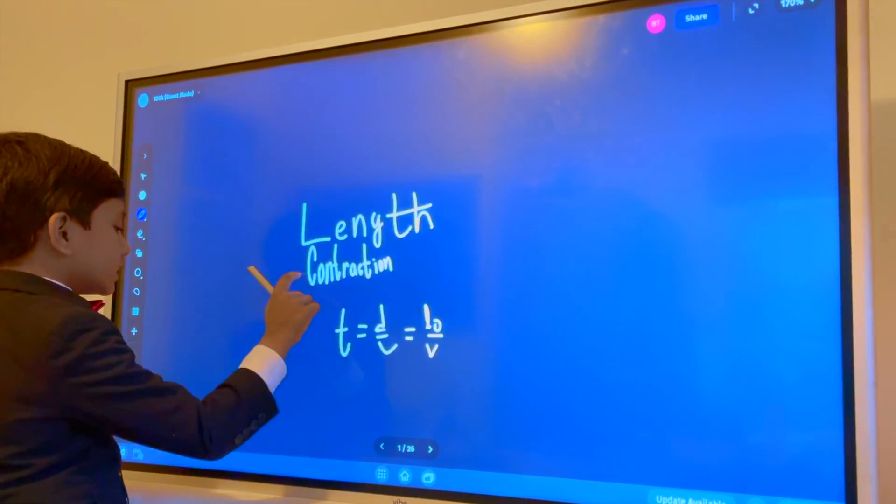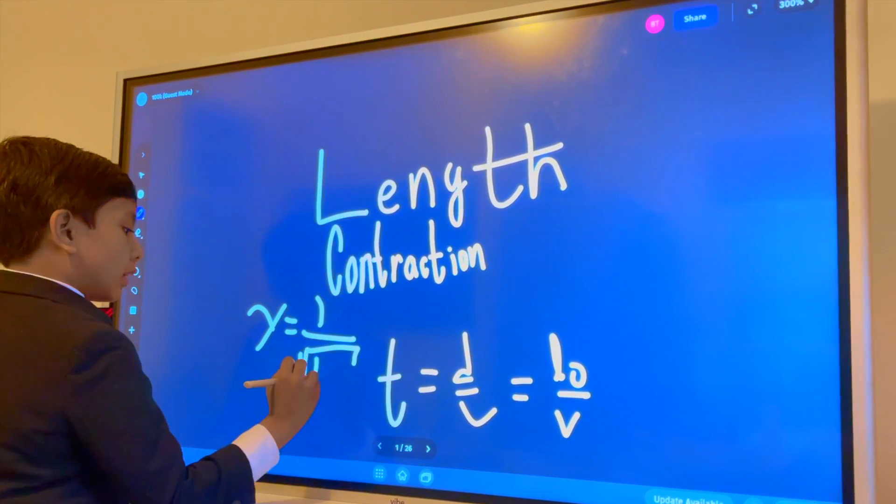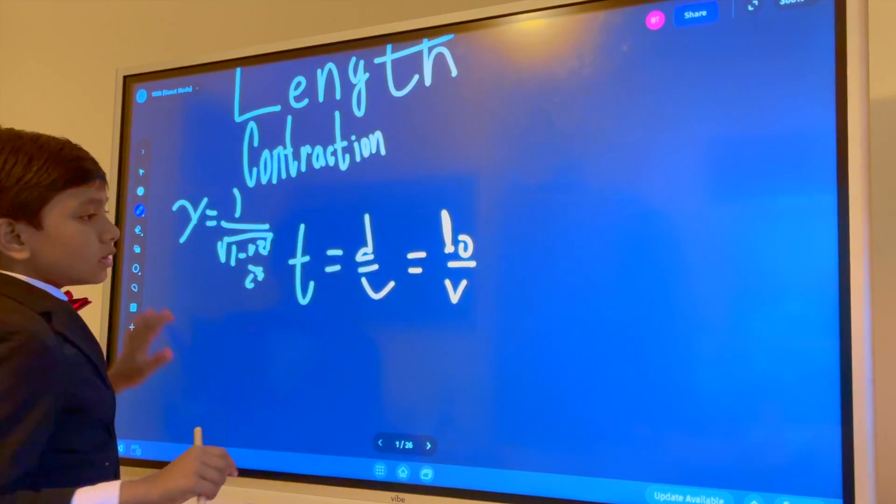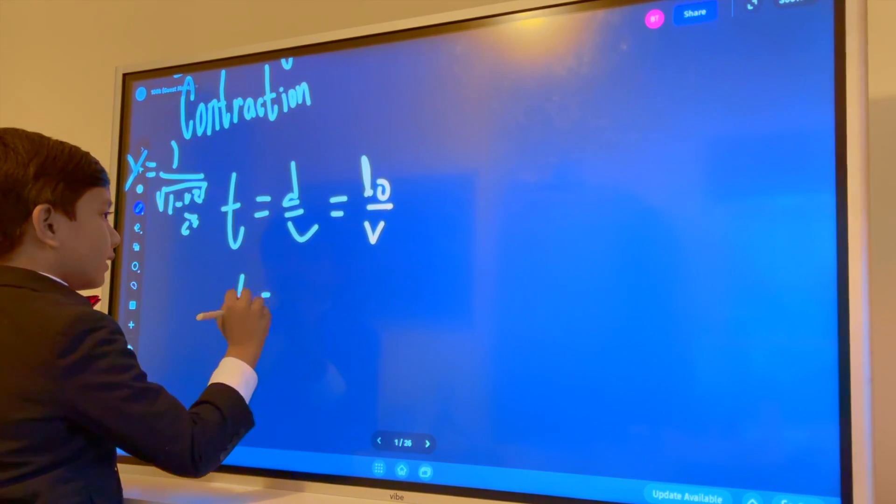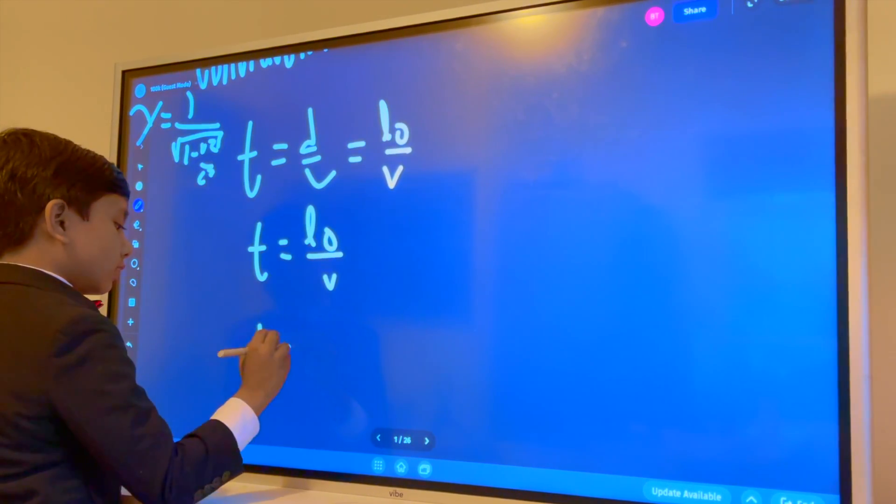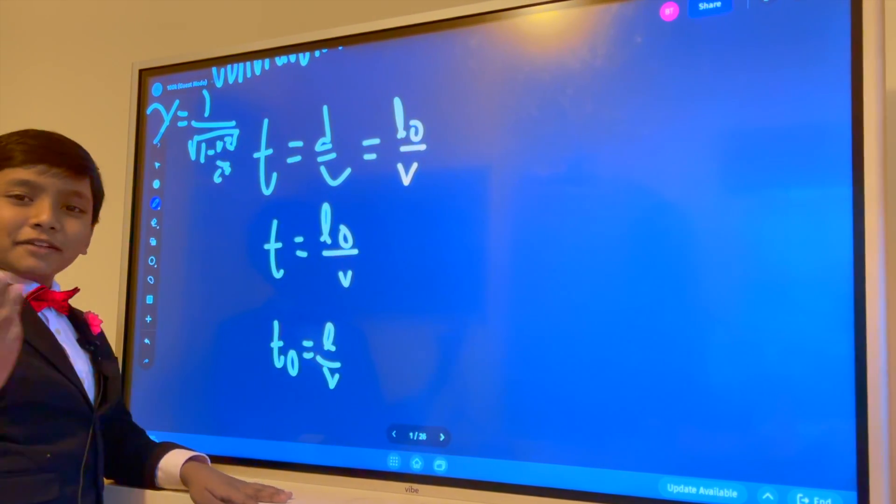By the way, I'll just be defining gamma as 1 over the square root of 1 minus V squared over C squared. Make things a bit simpler. So, T is L-naught over V. But, what is T-naught then? Well, that would be L over V. I know it sounds confusing, but stick with me.